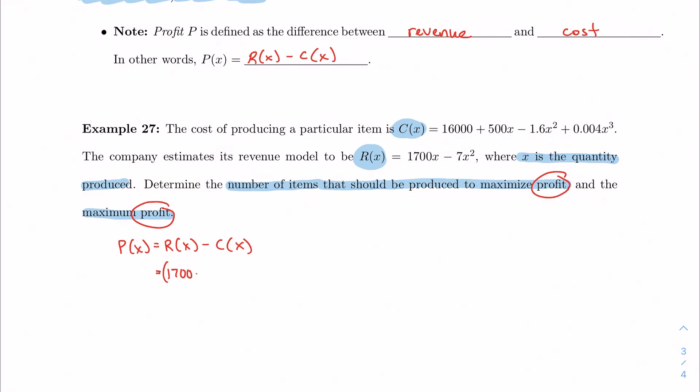So 1700 minus 7x squared minus 16000 plus 500x minus 1.6x squared. If I go through and simplify this whole thing, I'm going to have negative 0.004x cubed plus 1.0x minus 5.4x squared, plus 1200x minus 16000. So here is my profit function.